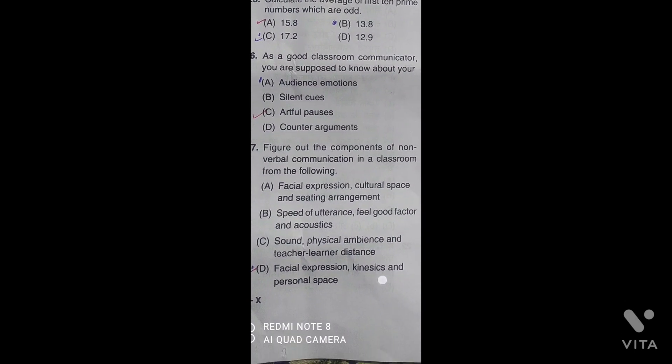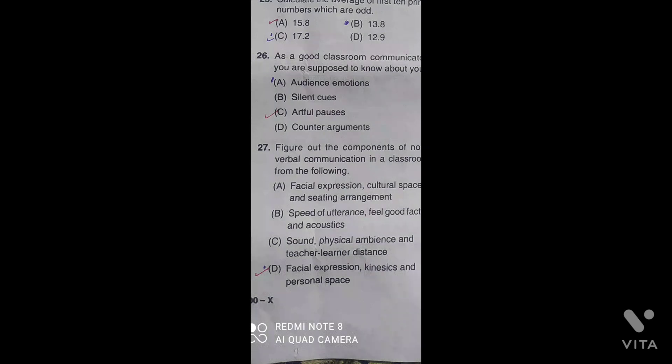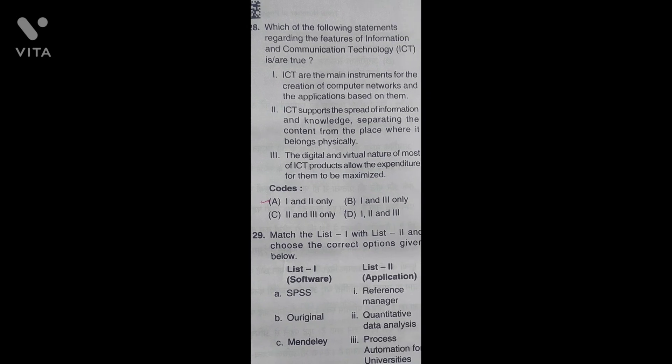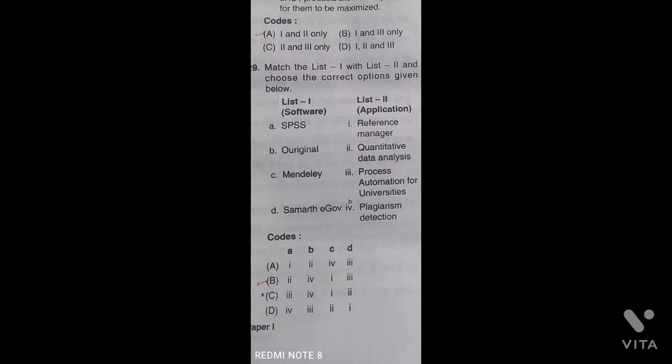As a good classroom communicator, you are supposed to know about artful pauses. Figure out the components of non-verbal communication in classroom: facial expression, kinesics, and personal space. Which statement regarding the features of information and communication technology is true? The correct answer is B: the main instrument for creation of computer network, ICT supports the sharing of information and knowledge, and the digital and virtual nature.